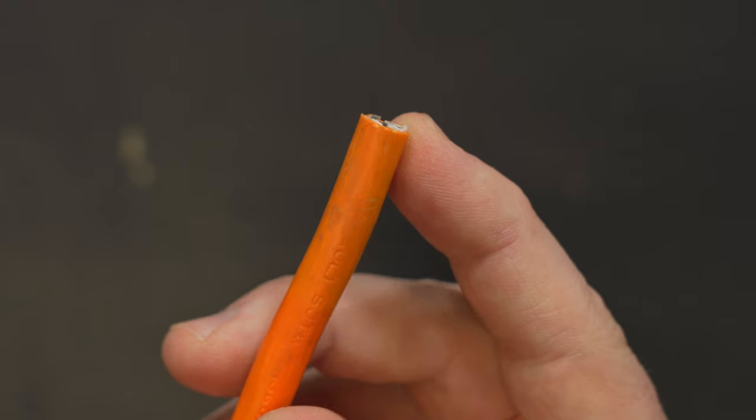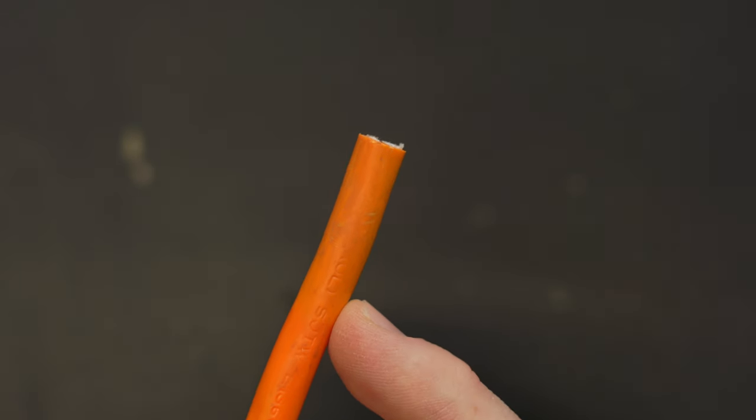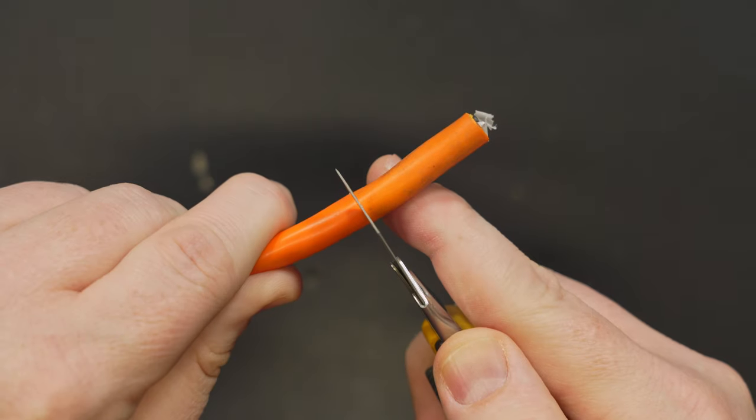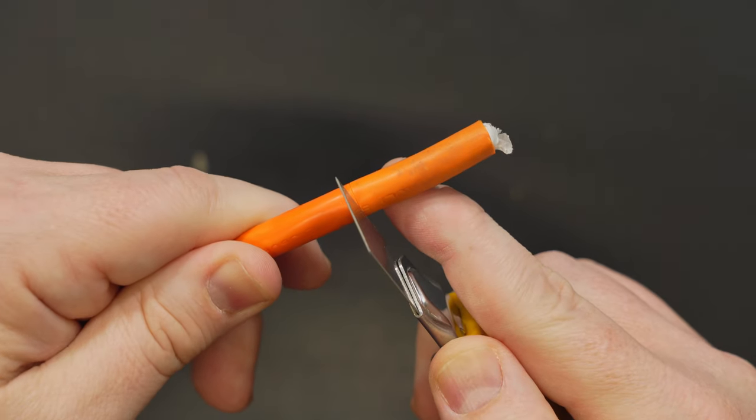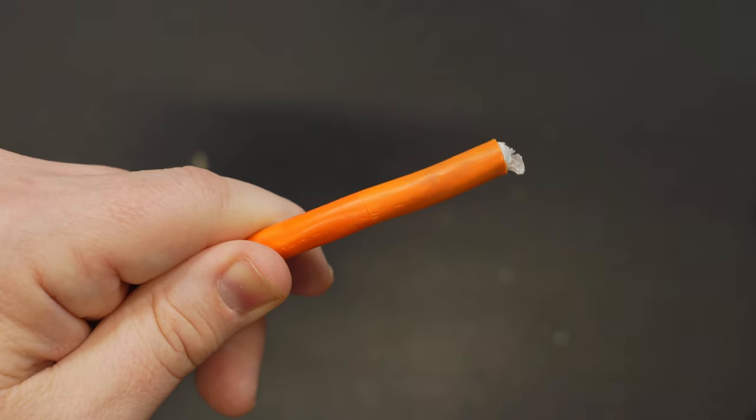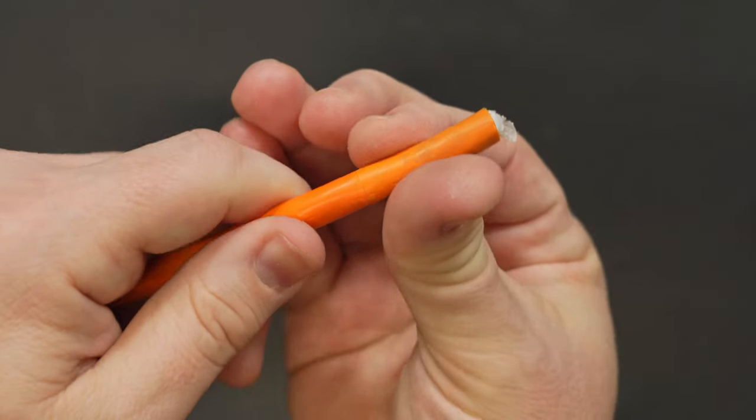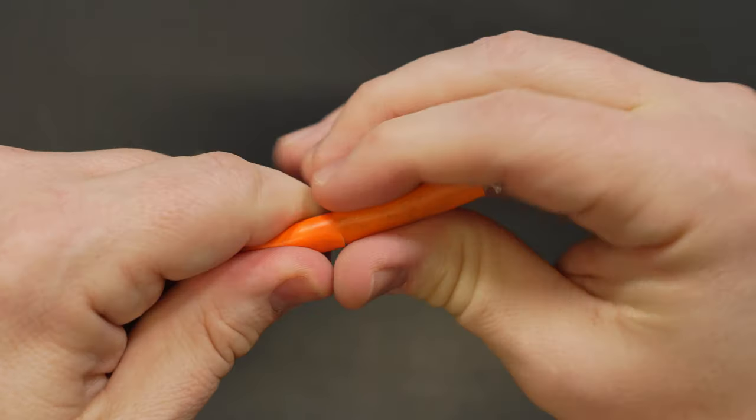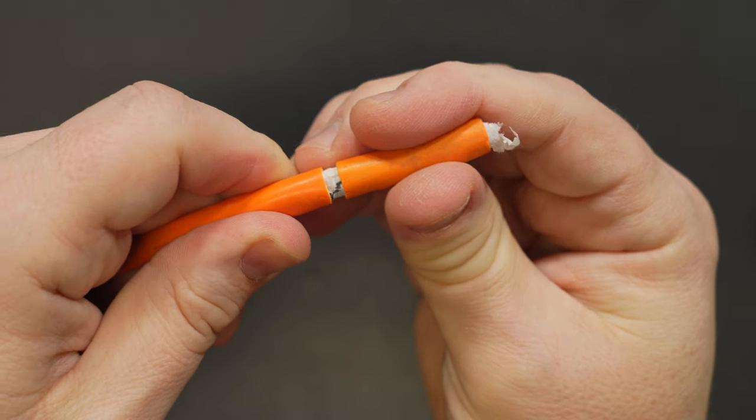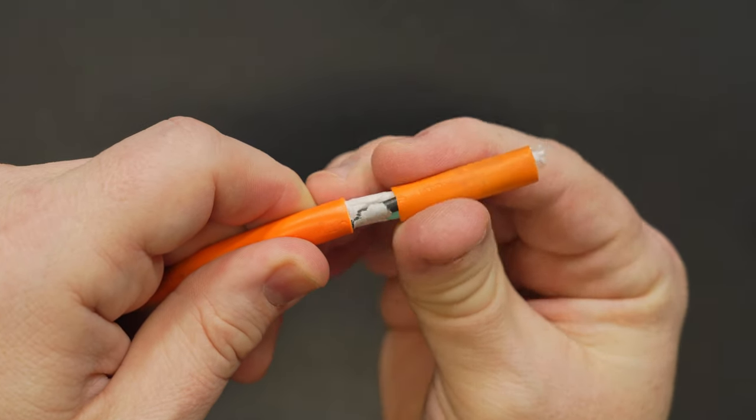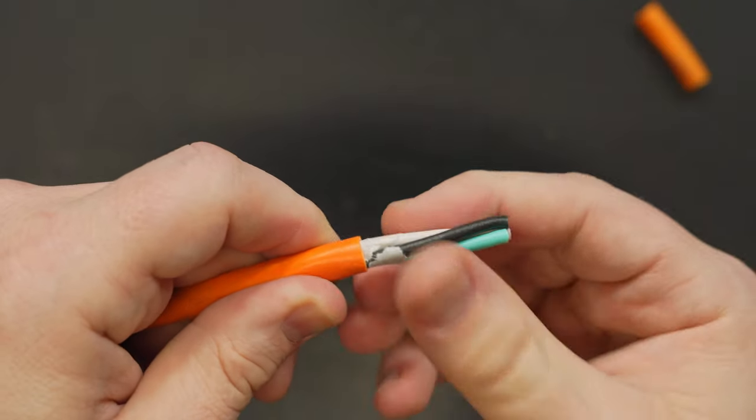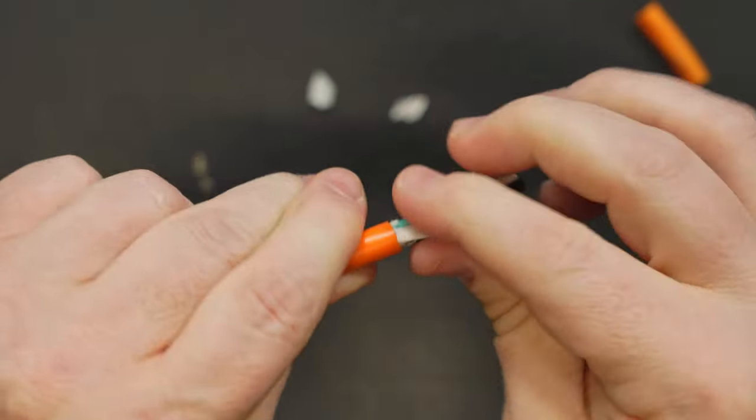We'll start by removing a short section of the orange outer insulation. You only need to take off about an inch maybe an inch and a half. Very carefully and very lightly score the outside of the jacket with a razor blade or very sharp knife. Be careful you don't cut all the way through as it's very easy to cut through the insulation and wind up cutting into the conductors that are inside. Then if you simply pull on the outer jacket of insulation it should tear pretty easily where you've scored it and that will then reveal the inner conductors without any damage to their insulation.